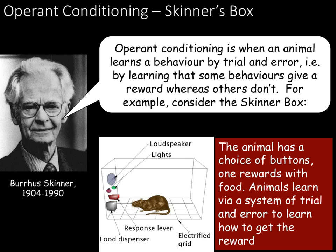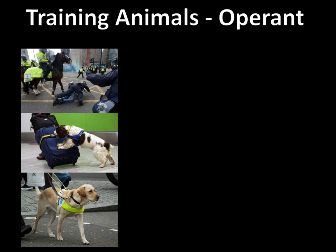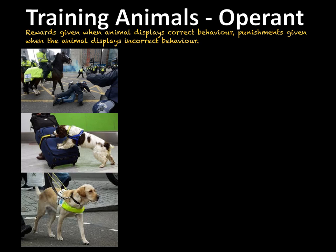We can use both classical and operant conditioning to train animals to do certain things. Most training of animals nowadays happens via operant conditioning — giving rewards when the animal does what we want or punishment when it doesn't. Treats can include things like food or praise, whereas punishments can be vocal or more physical like choke chains. Nowadays punishment isn't recommended for animal training as it stresses the animal out, and rewards work just as well if not better.